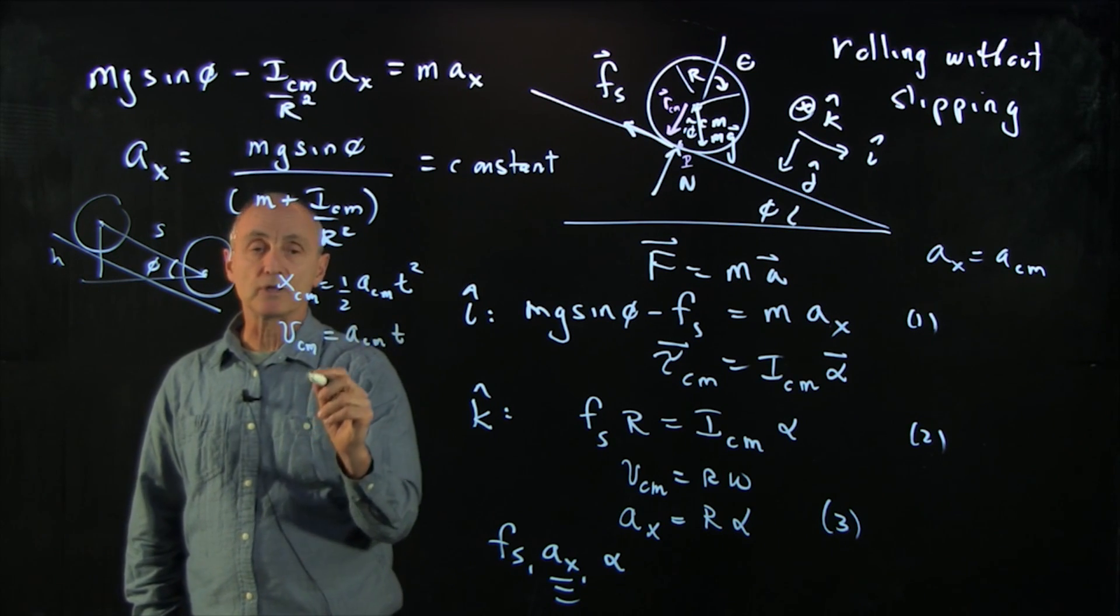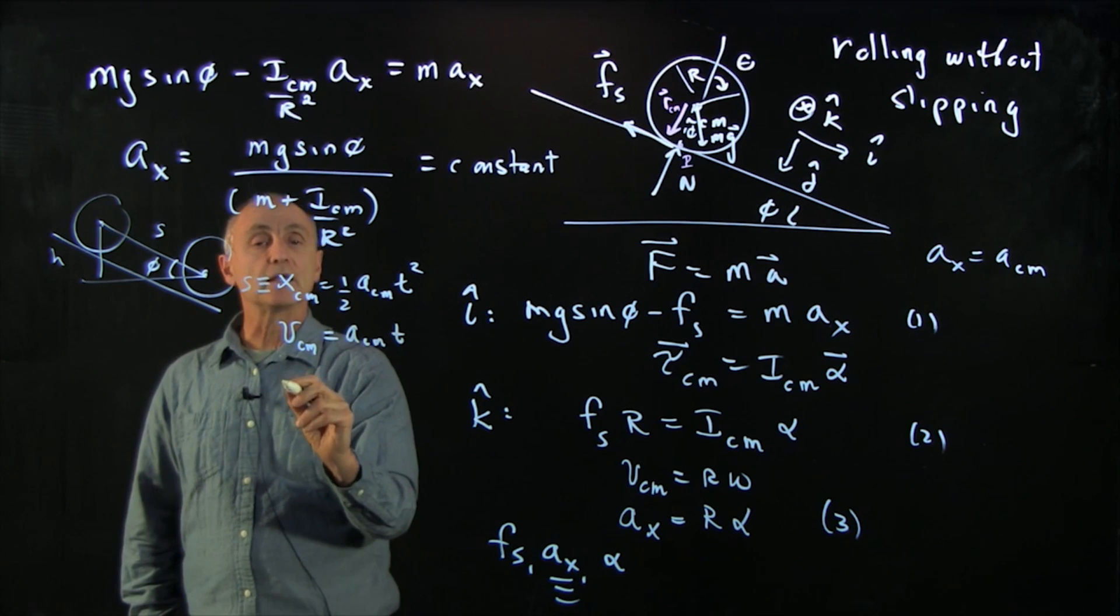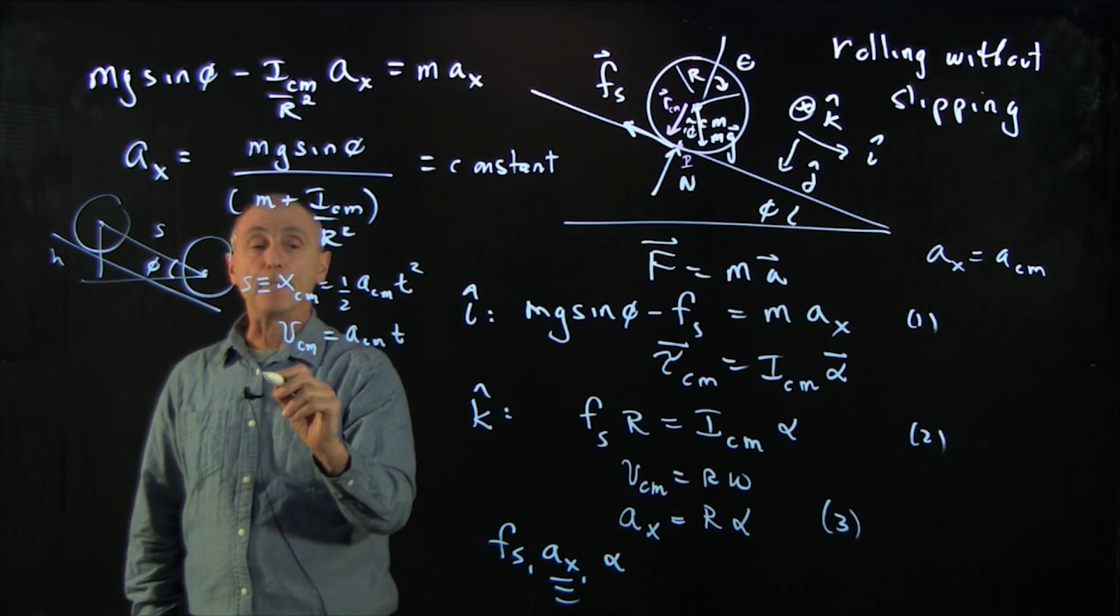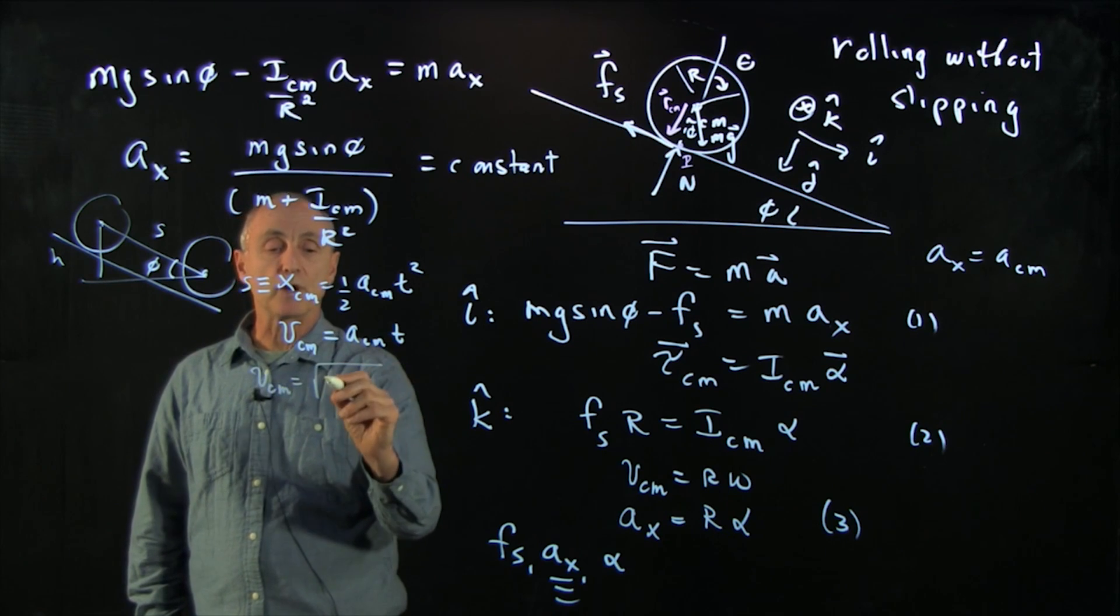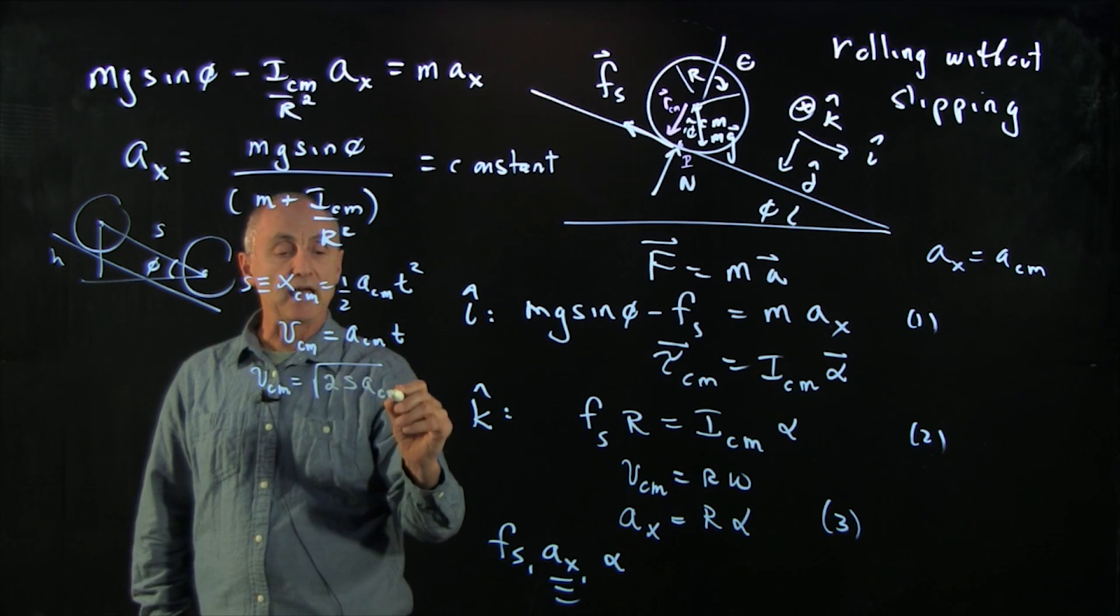And so when we put these two together, this is the distance s, we get that the velocity cm is equal to the square root of 2s times a cm.